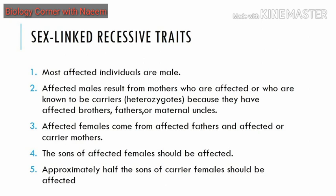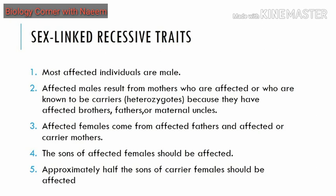So if you see a pedigree in which an affected female has all of her sons affected, that should indicate it is a sex-linked recessive trait. Approximately half of the sons of a carrier female should be affected. A carrier female has one normal X chromosome and one X chromosome with the affected allele, so there is a 50 percent chance — half of her sons should inherit a normal copy and half should inherit the abnormal copy. Solve this one for yourself, and I will help you in the next video.